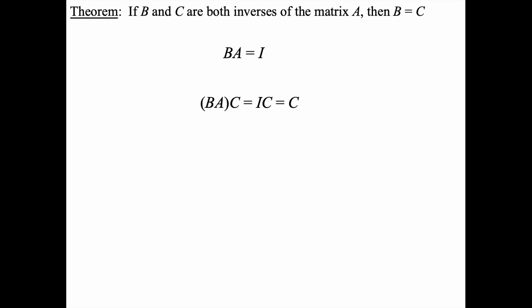And if we use the other inverse C and multiply it on the right while grouping BA together, we would have BAC equals identity times matrix C, which is simply matrix C.